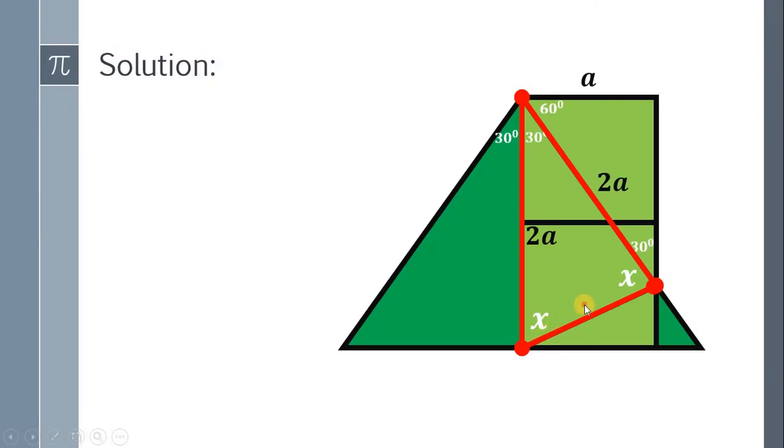Therefore, we have an equation x plus x plus 30 equals 180 because the sum of the angles inside each triangle adds up to 180 degrees. Now, what we're going to do is to solve for x.